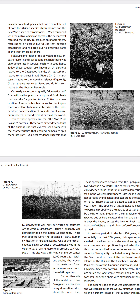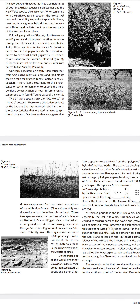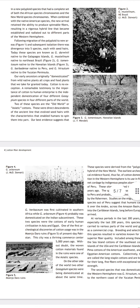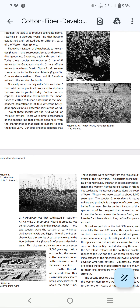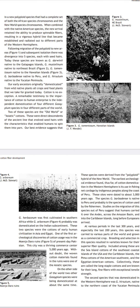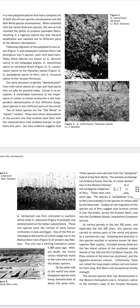The city of Mohenjo-daro ruins provides the first archaeological discovery of cotton usage. The city was thriving 5,000 to 7,500 years ago. Without doubt, the woven cotton materials found in these ruins were one of the Asiatic species.